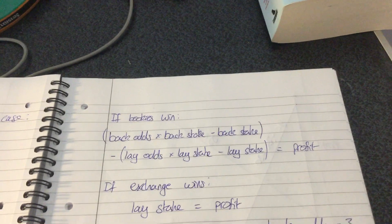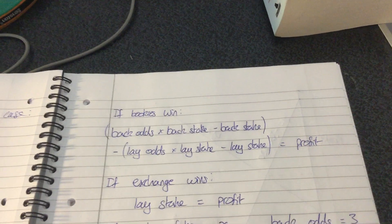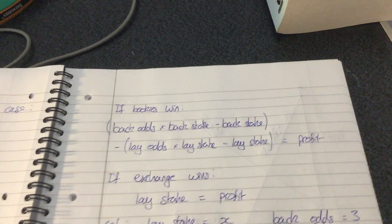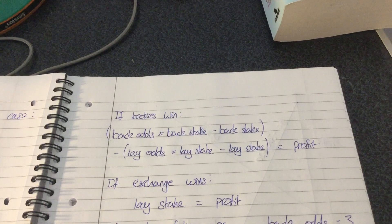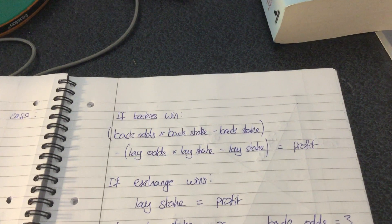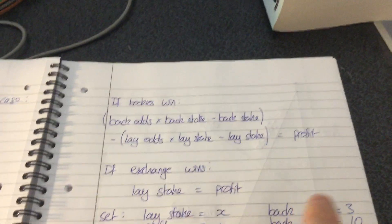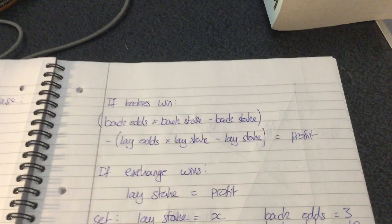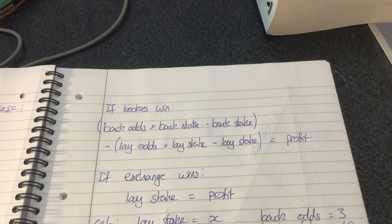So if for example the back odds were 2.0 and the back stake was 10 pounds, then my returns on that bet is going to be 20 pounds. But I already started out with 10 pounds, so I need to subtract that back stake there and that will give me the total profit on a bet.